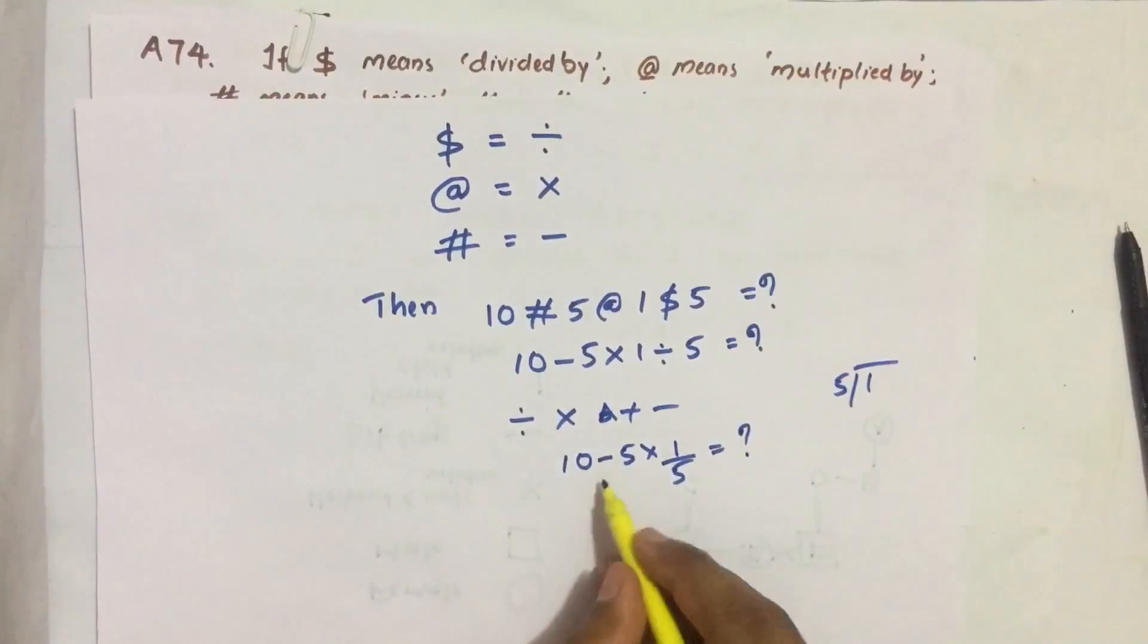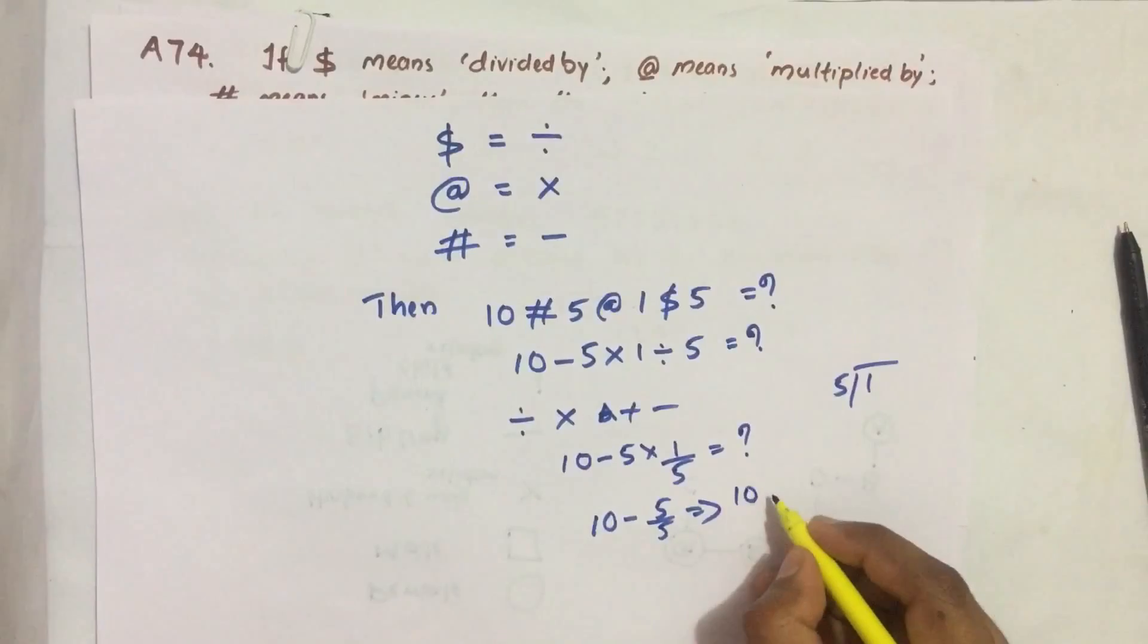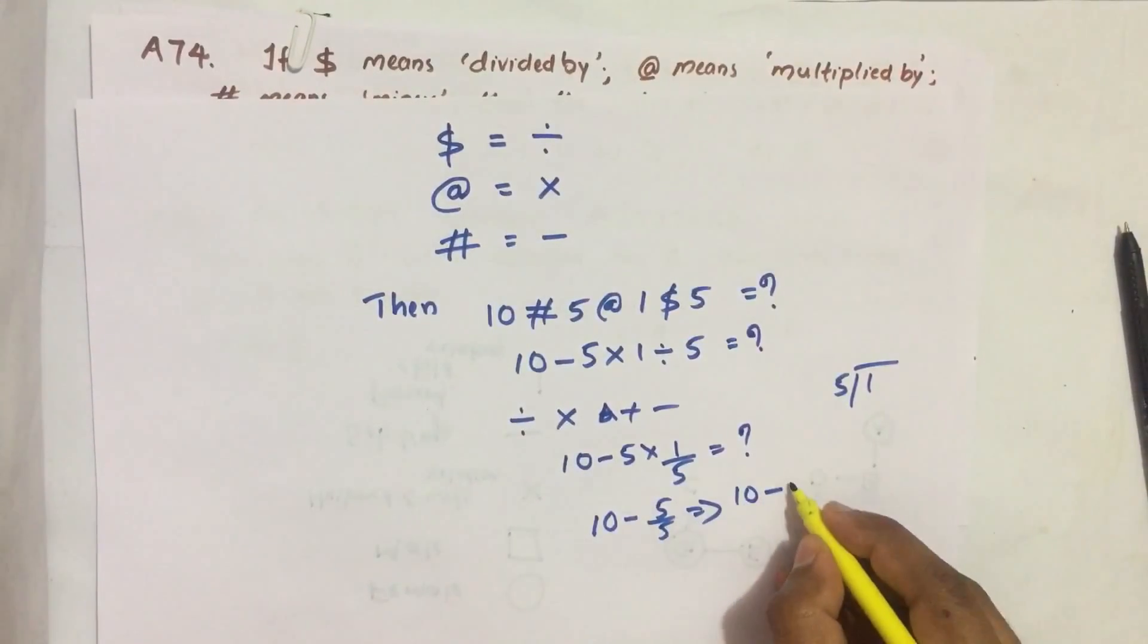Then 10 minus, next we do multiplication. 5 into 1 divided by 5. 5 by 5 we get 1, which is 10 minus 1.